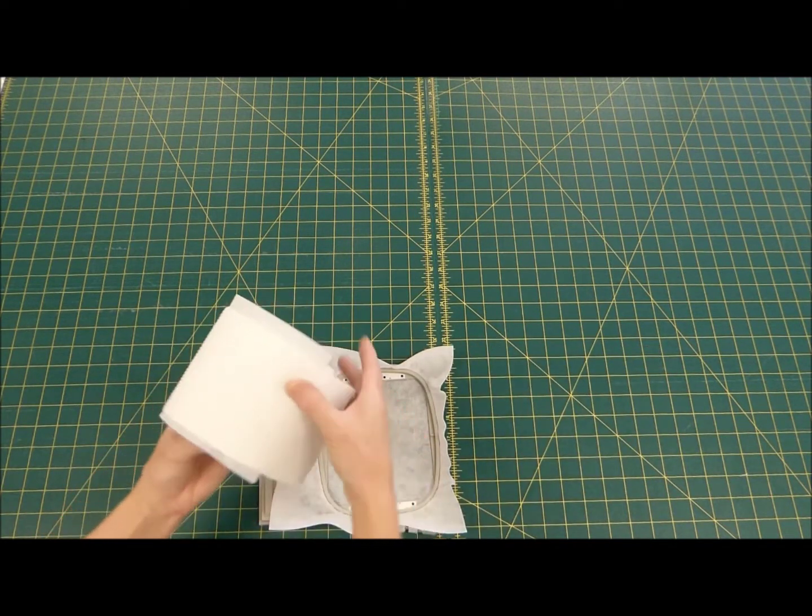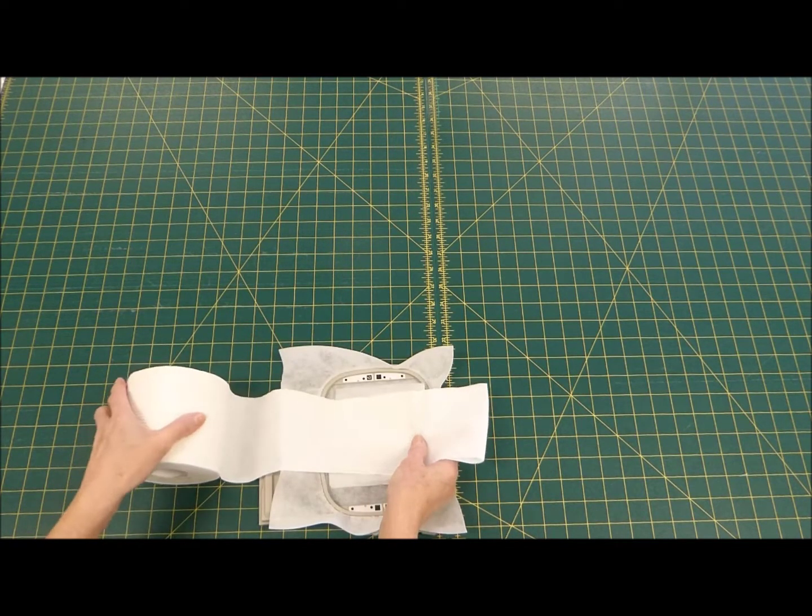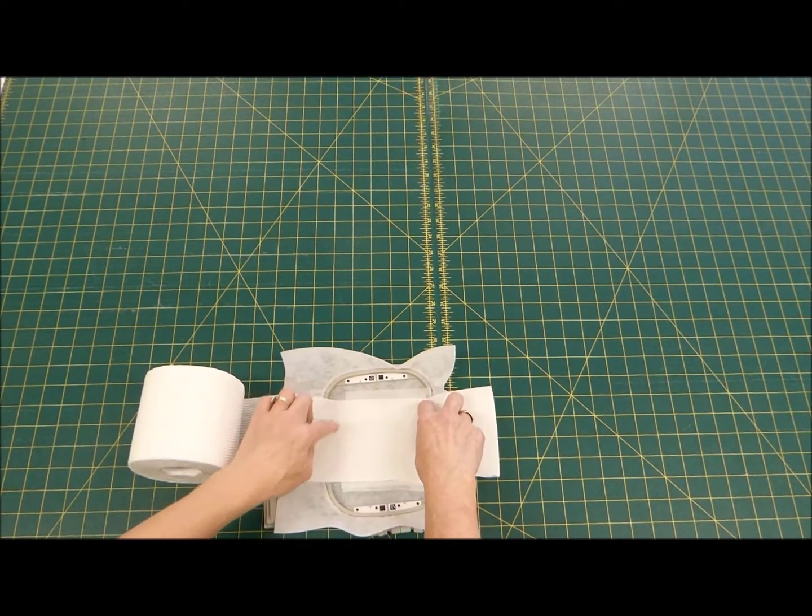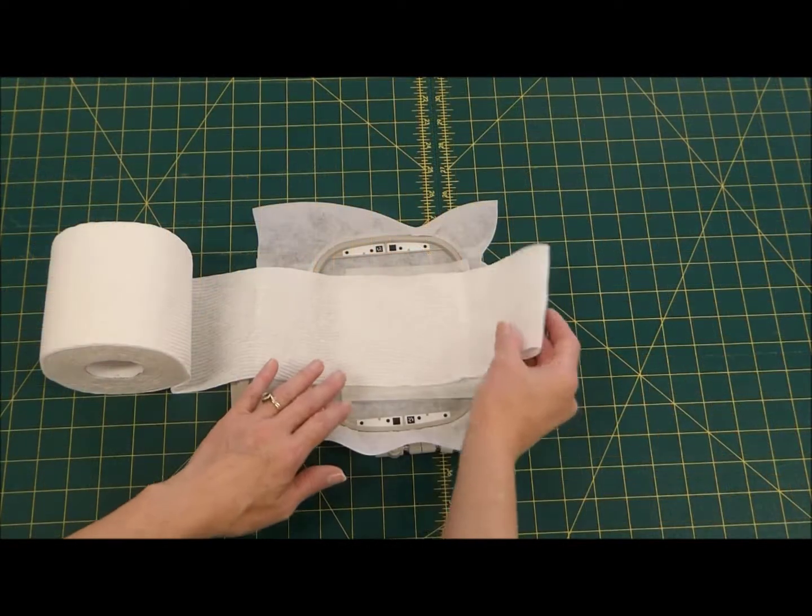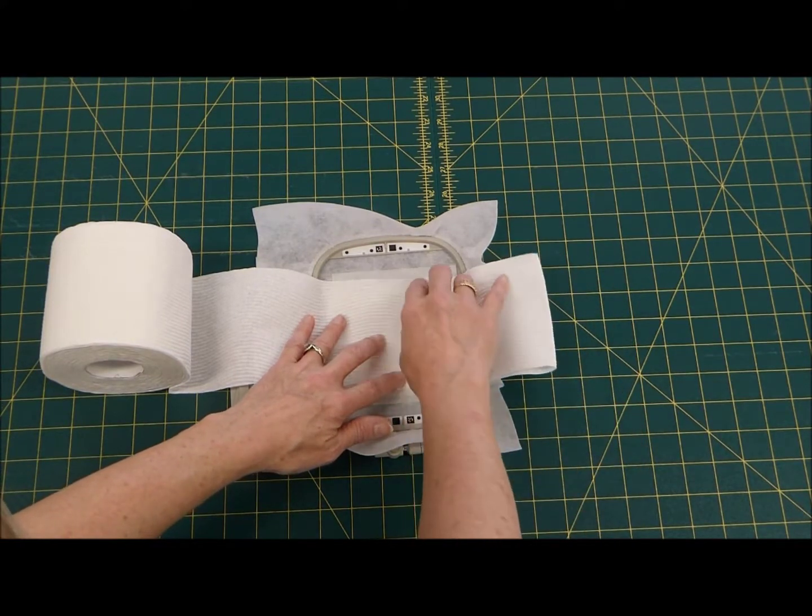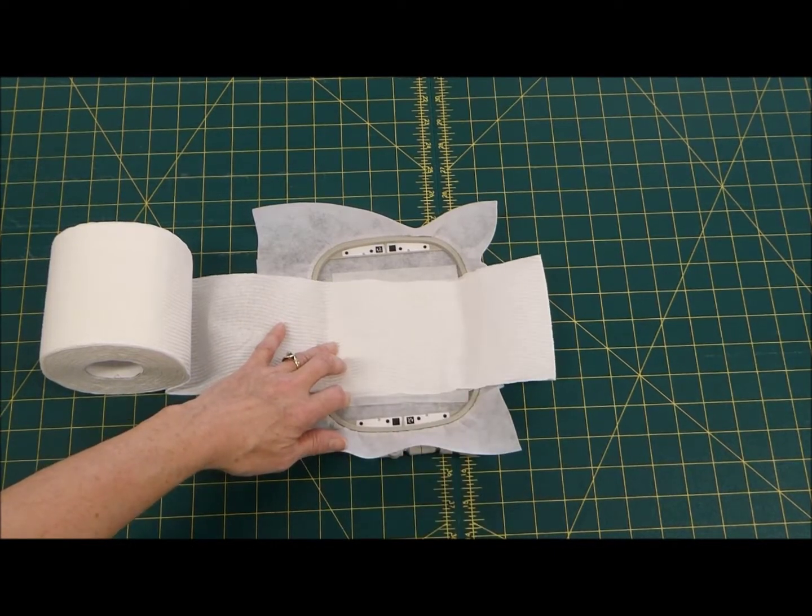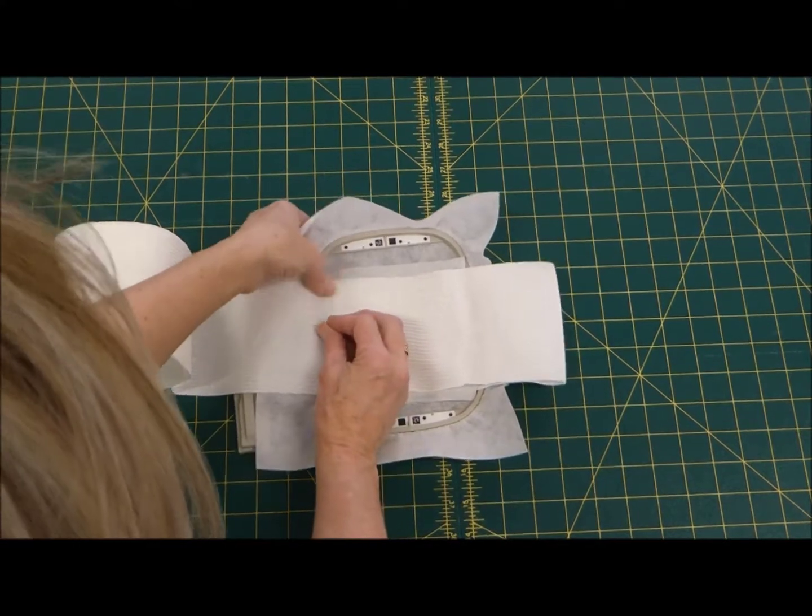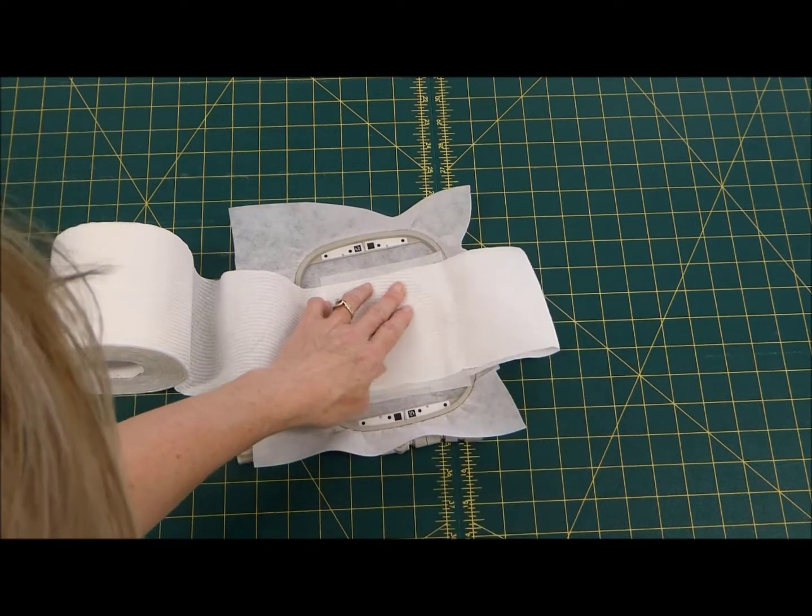So when you hoop it, hoop the bulk of the roll out to the left and place your embroidery area into the hoop and simply pin it with four pins on either side, well outside the embroidery area. Make sure everything is squared up so that it's nice and straight here, your edges match, both layers of toilet paper match, and you then pin it central to your hoop. Also pin it nice and straight and parallel to your hoop.